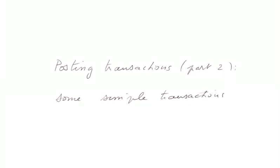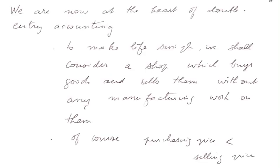Posting Transactions Part 2. Let's look at the actual posting of some simple transactions. We are now at the heart of double entry accounting. To make life simple, we shall consider a shop which buys goods and sells them without any manufacturing work on them. The purchasing price will be less than the selling price. For a given article, there will be two prices: the purchasing price and the selling price, and usually the selling price is somewhere around twice the purchasing price.